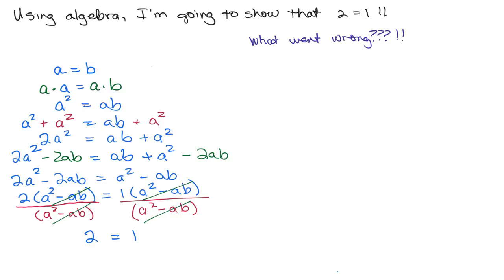Well, if we look at the very beginning, we have that A equals B, right? That means that A minus B is equal to 0. If we multiply both sides by A, you would have A times A minus B equals A times 0, which is the same thing as A squared minus AB is equal to 0.